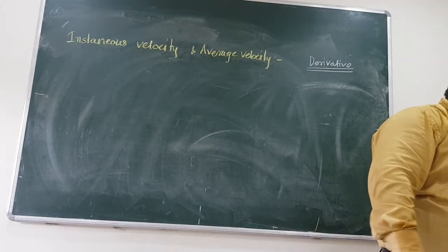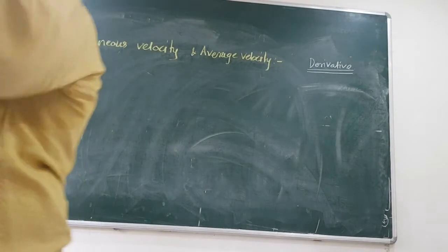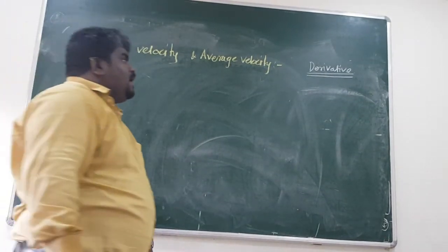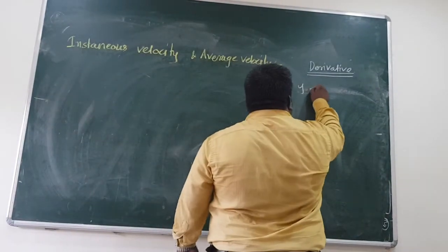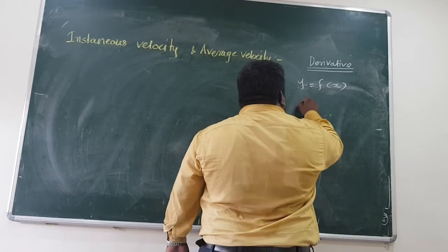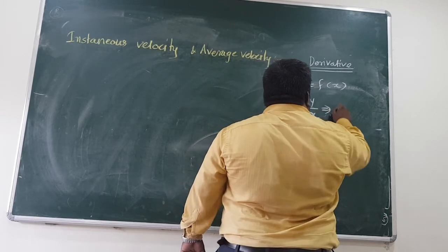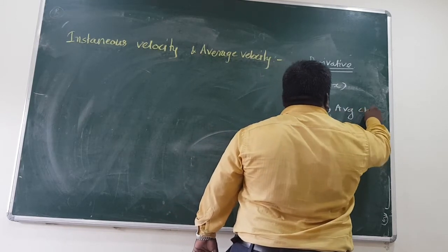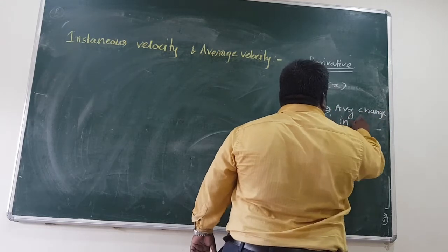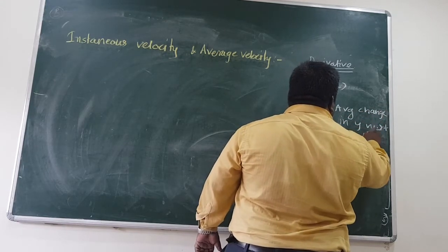Now when we defined derivative — you turn a few pages back and check the definition. If y is equal to f of x, then delta y by delta x gives average change in y with respect to x between two points.